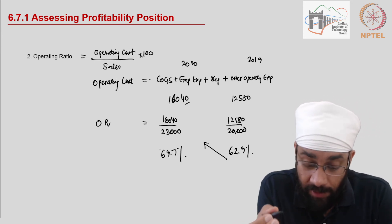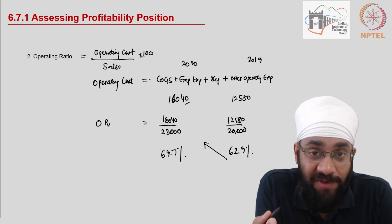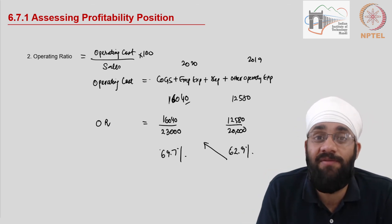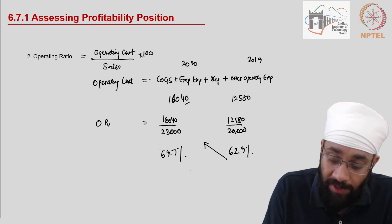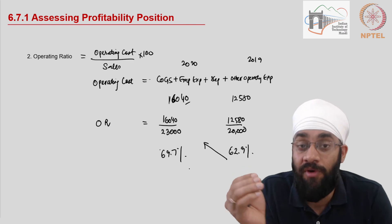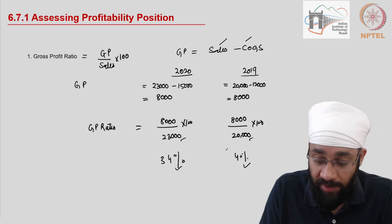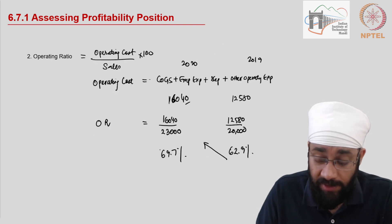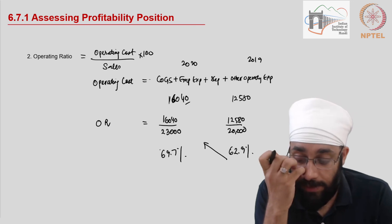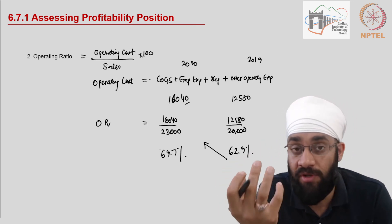This is operating cost ratio, not operating profit — so an increase means expenses have gone up, which is not a good situation. You want to reduce costs. So we see that gross profit is going down and operating cost is going up, indicating something is happening in this business leading to increased cost and reduced gross margin.